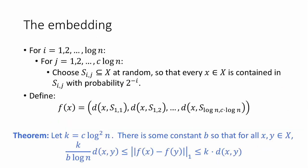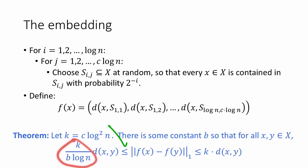Returning to our original theorem, we just established the lower bound inequality, and we had previously shown the upper bound. That proves the entire theorem. In conclusion, this embedding works, and we can embed any N-point metric space into L1 with O(log N) distortion. That's pretty cool. That's all for now, thanks for watching.